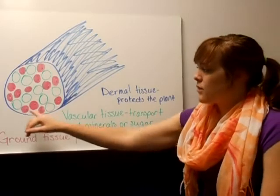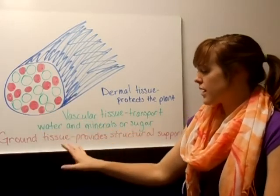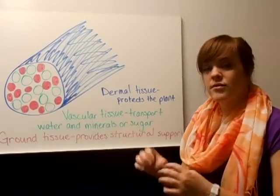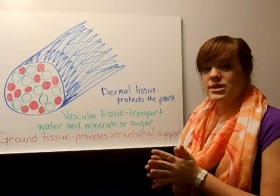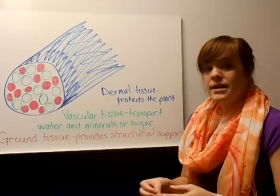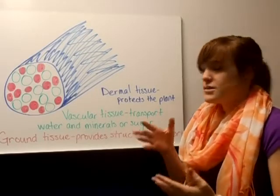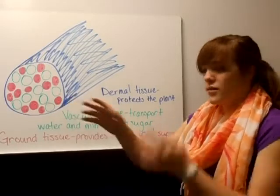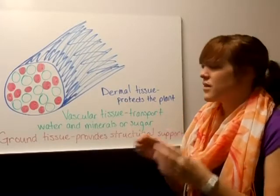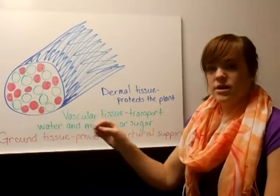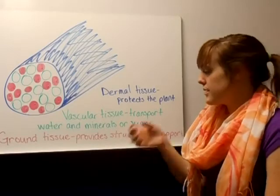The pink ones are the ground tissue, and they're solid, and they provide the support to actually keep the plant standing. So if they weren't there, it wouldn't have any support. You can think of them almost like the bones in our body that keep us supported.